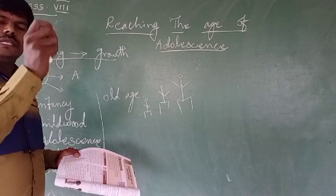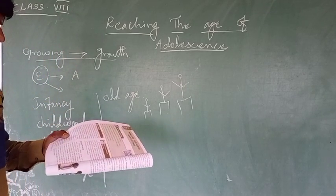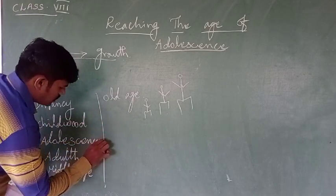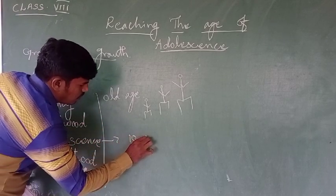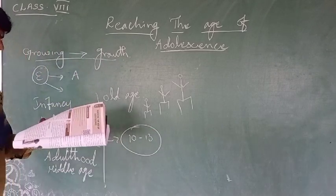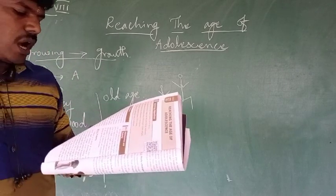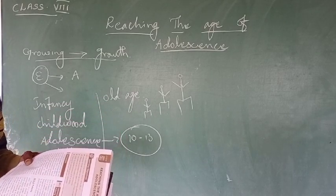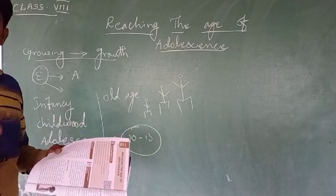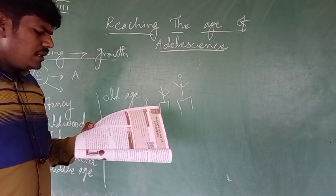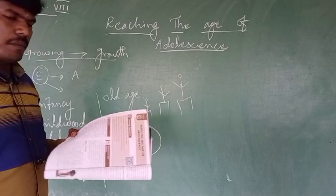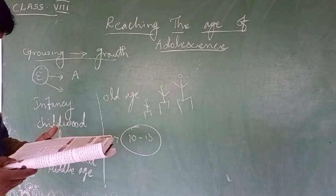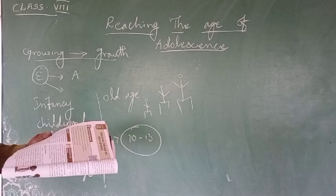This transition from childhood to adulthood starts at around age 10 to 13 and extends to about age 19. Almost half of you would have entered this period now. In this lesson, we are going to study about reaching adolescence and the changes that take place in you.